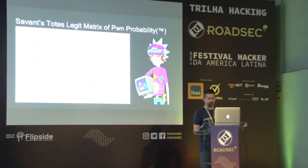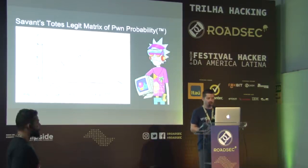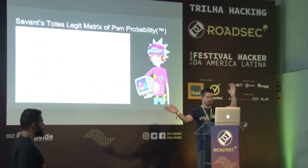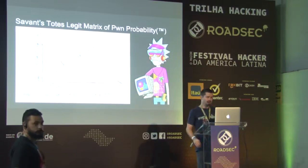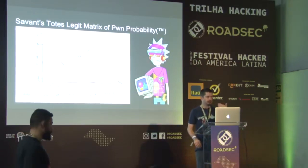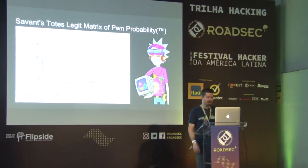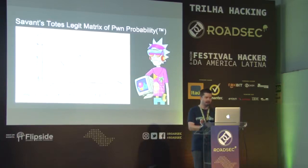What is Savant's totes legit matrix of prone probability? Well, it's this — a very official graph. Basically, what we've anecdotally seen is that as the age of an organization increases and their number of users grows, you have a higher likelihood of owning them. There are systems that people set up and forget about, technical debt that's incurred, and the company may have acquisitions with completely different tech stacks being migrated in. There are all these different ways to win.